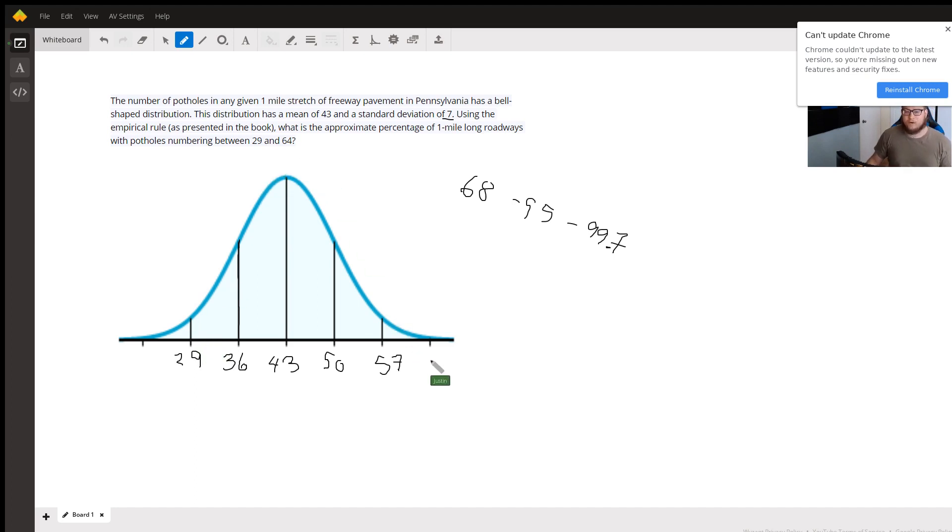but 64 is three standard deviations above the mean, which means we can't just use one of these three numbers as our answer